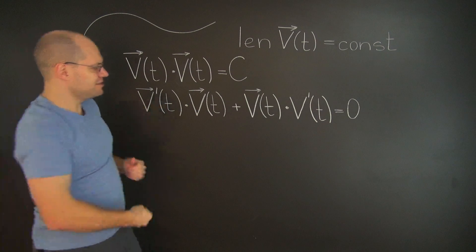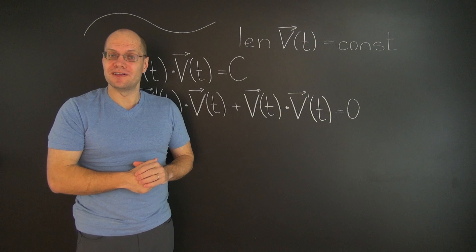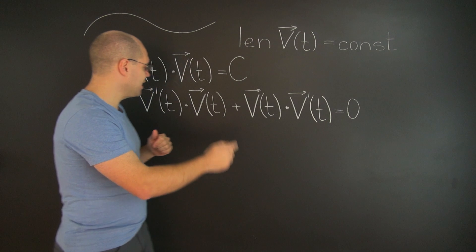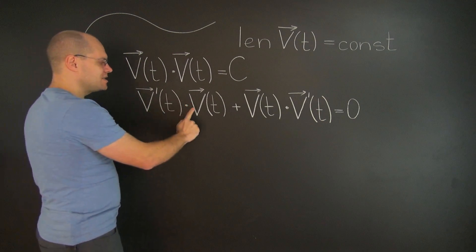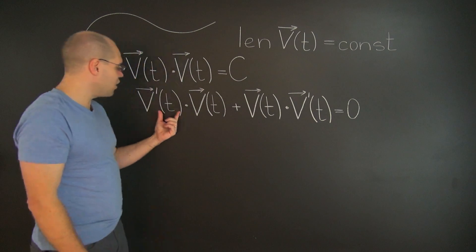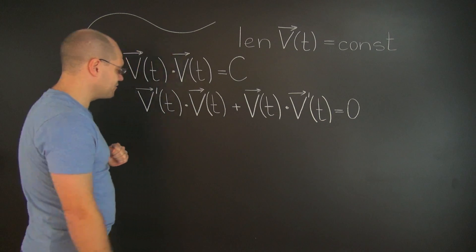Okay, now we see that the two terms in this sum are equivalent, because the dot product is commutative. So we can combine them into one. We'll have two V prime dotted with V equals zero. And I will also drop the argument T, because it's not necessary for the finite conclusion.